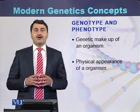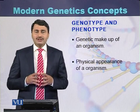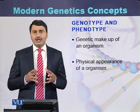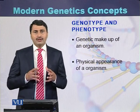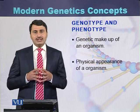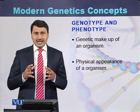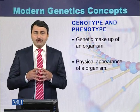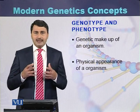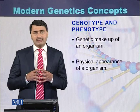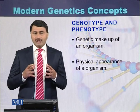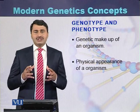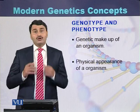What is the meaning of genotype and phenotype? Genotype is the genetic makeup of an organism, including the number of chromosomes, number of genes, the sequence of the genes, or the inheritance pattern of an organism. Phenotype is the physical appearance of an organism, such as the height of an individual, the color of the skin, or the color of the eyes. These traits are called phenotypes.